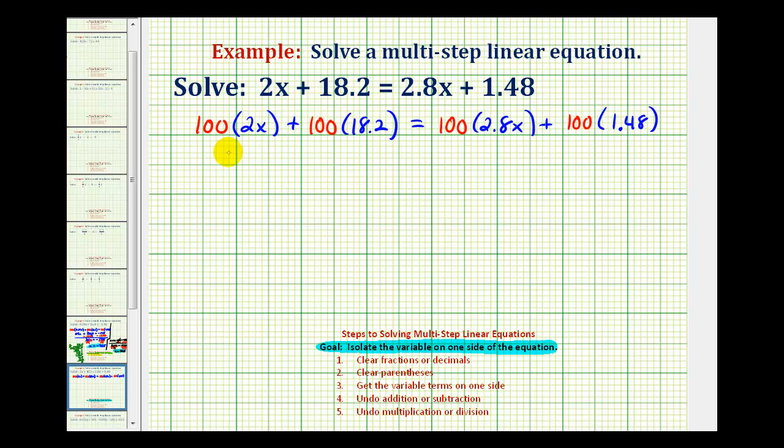So again, multiplying by 100 does have the effect of moving the decimal point to the right two places. So for this first product, 100 times 2x would be 200x. 100 times 18.2, if we move the decimal point to the right two places, we do have to add a zero, and we would have 1820.